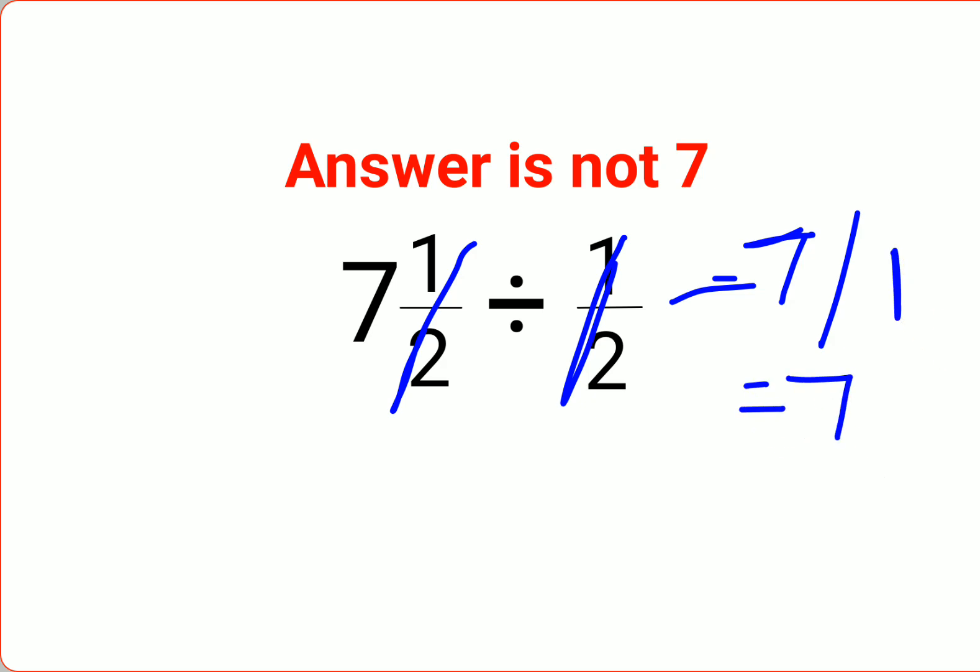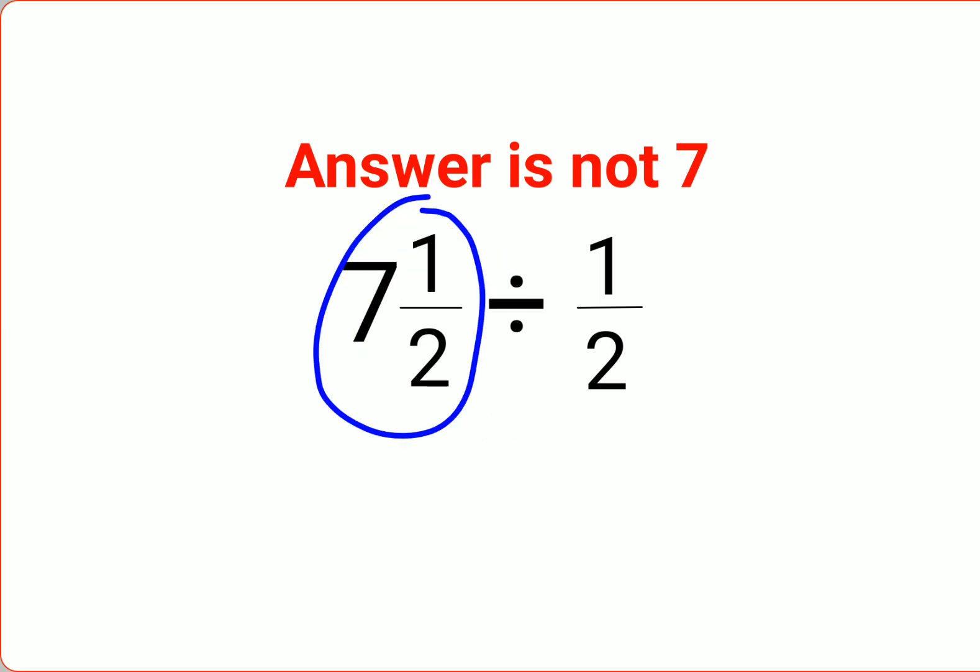But that is not how these things work. Please understand - the numerator, this entire number, is basically a mixed fraction. Your first job is to convert 7 1/2 to its improper fraction form. Here, 2 remains your denominator.